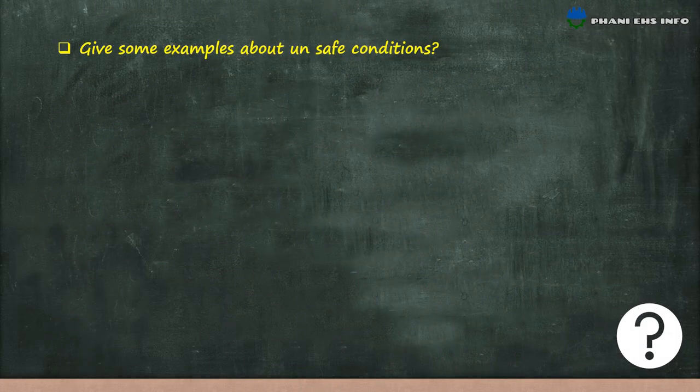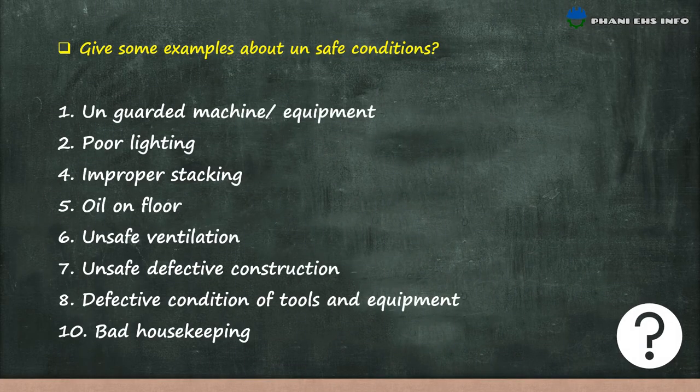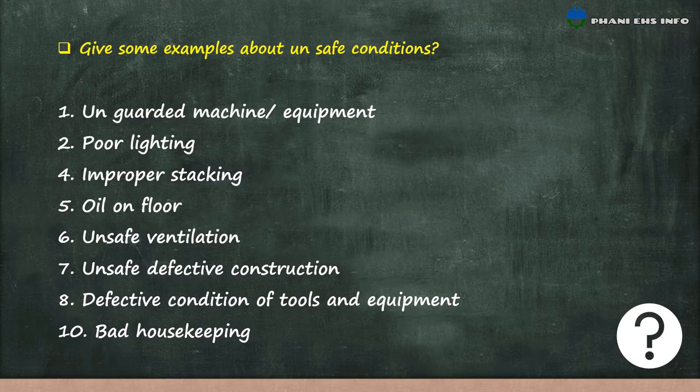Give some examples of unsafe conditions. Unguarded machine or equipment, poor lighting, improper stacking, oil on floor, unsafe ventilation, unsafe or defective construction, defective condition of tools and equipment, and bad housekeeping. These are some of the examples of unsafe conditions.